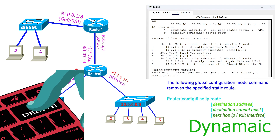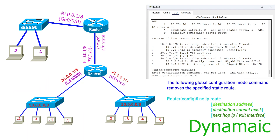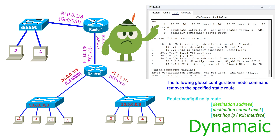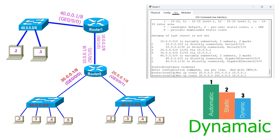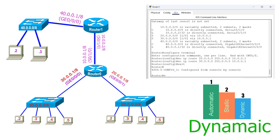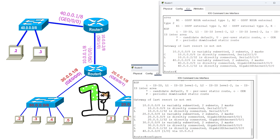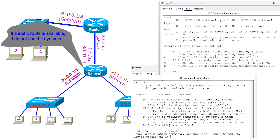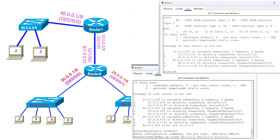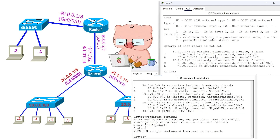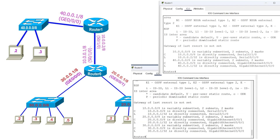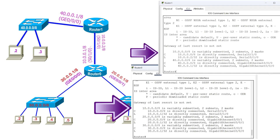Before configuring RIP, we must remove the static routes we added earlier. If we do not remove them, the router will not add routes discovered by the routing protocol. Routers give priority to static routes over dynamic routes and keep only one route per destination in the routing table — if a static route is available, the dynamic route is not added. After removing static routes, rerun the show ip route command to verify they have been removed.